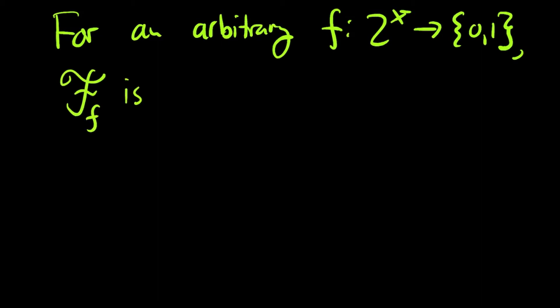Now at the other extreme of the hierarchy, if you have an arbitrary function from 2^X into {0,1}, you can get an arbitrary subset of 2^X as this collection script F. Namely, given any collection of sets, subsets of X, define a function that sends those sets to one and every other set to zero.